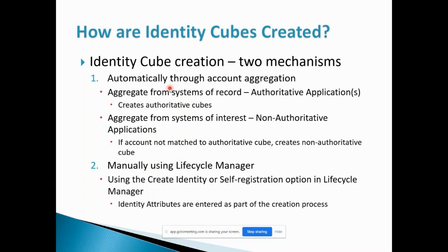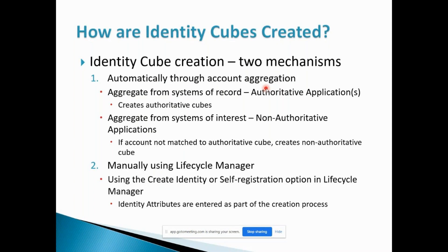First, how we can create the user within Identity IQ: automatically through account aggregation, loading data from the target application to SailPoint. There are two types of applications available in SailPoint Identity IQ — one is authoritative and the other is non-authoritative. Authoritative is an application that SailPoint completely trusts to populate identity attributes.